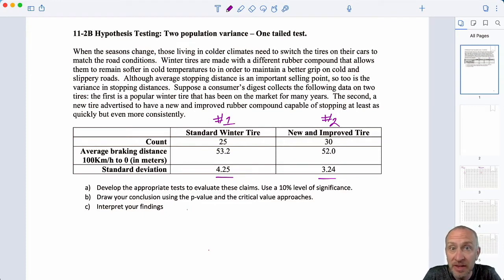Although average stopping distance is an important selling point, so too is the variance in stopping distances. Suppose a Consumer's Digest collects the following data on the two tires.